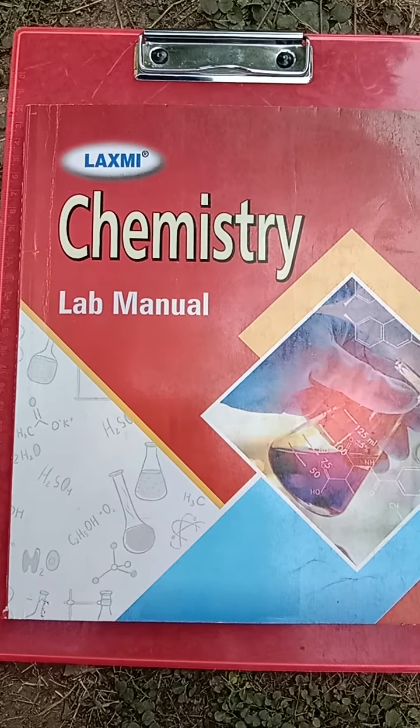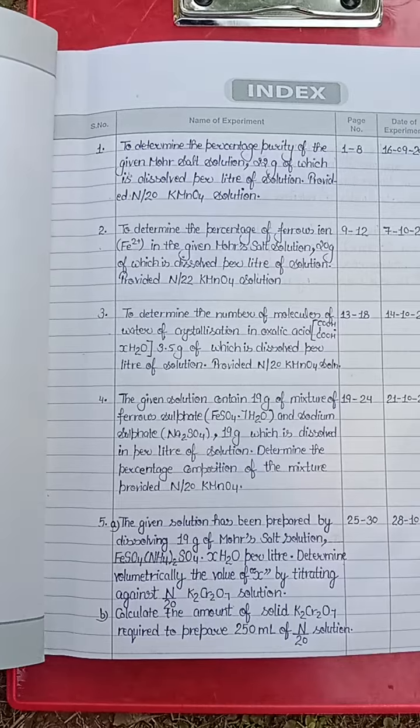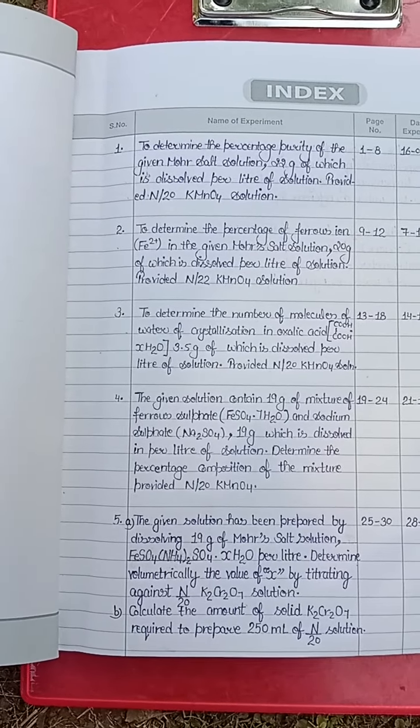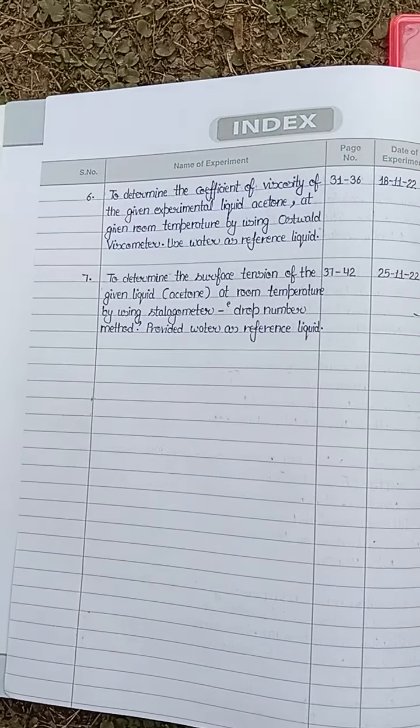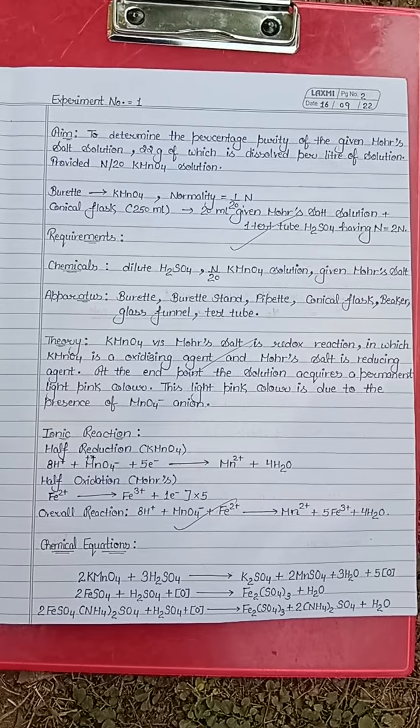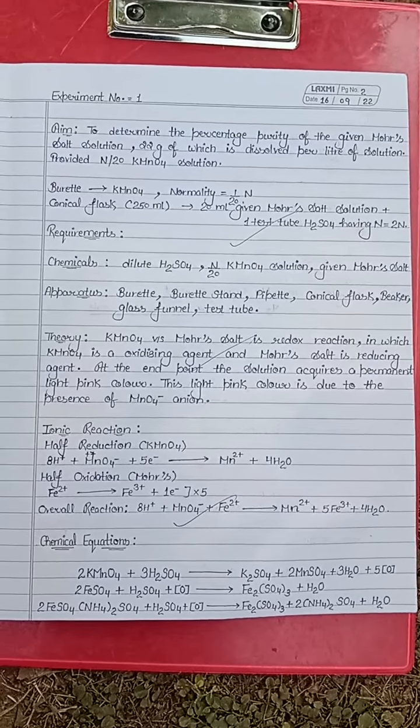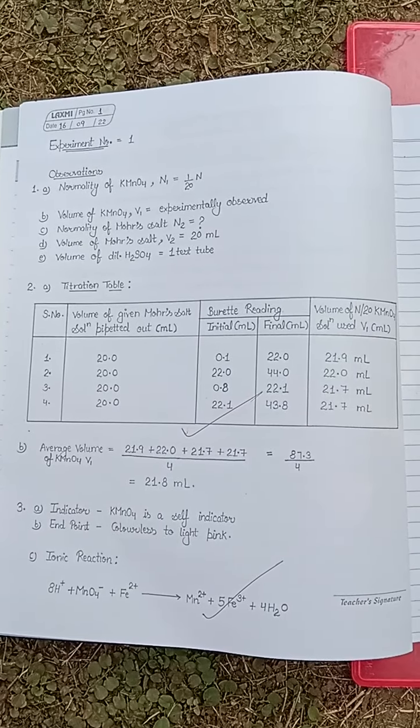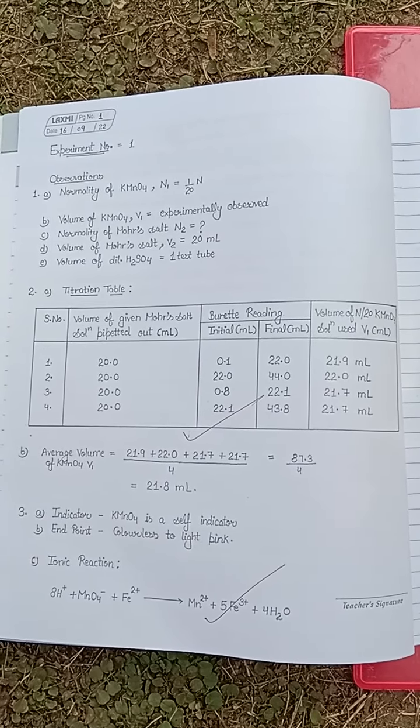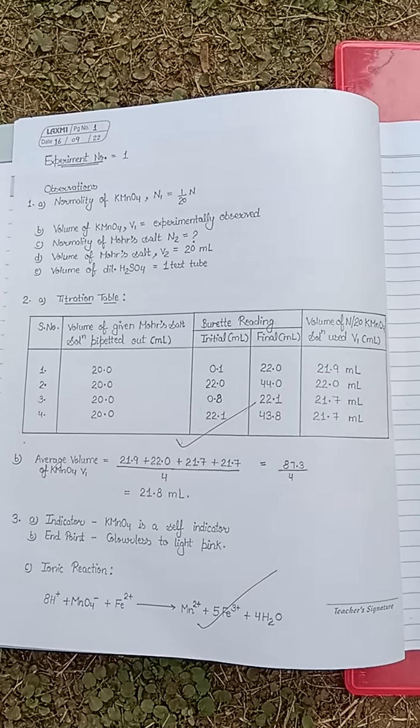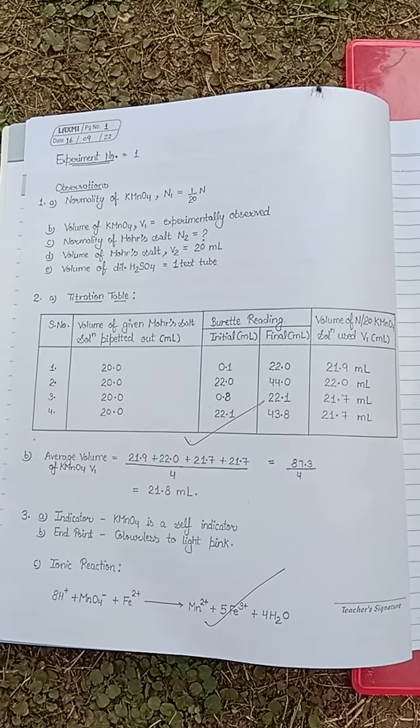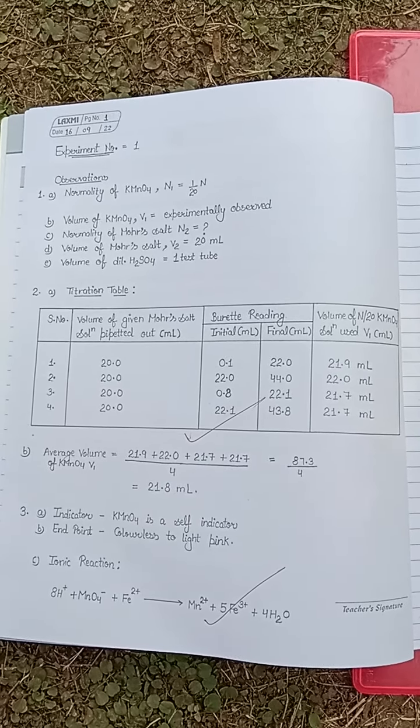As you can see, this is our chemistry practical. The main index page is present here. You can see this is our first experiment and this is an experiment of titration. Here we have written the observation terms and calculations which we have to calculate in the titration table.